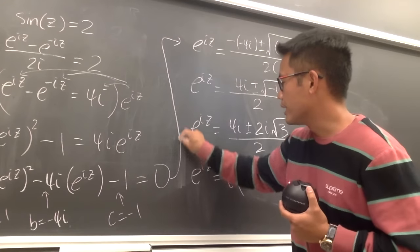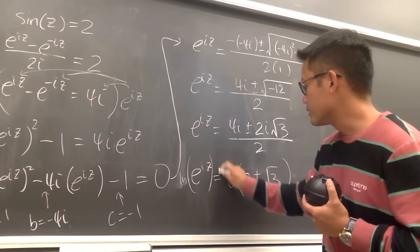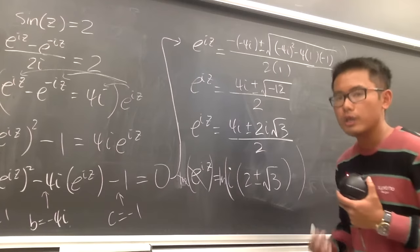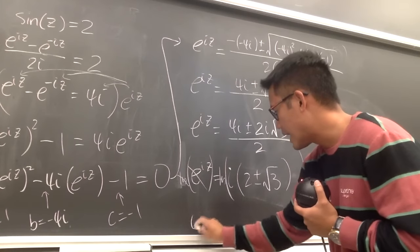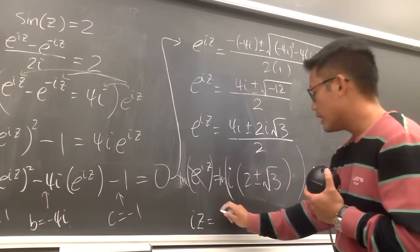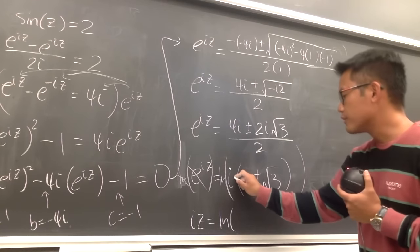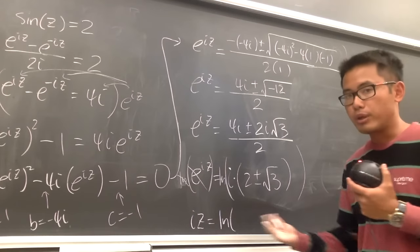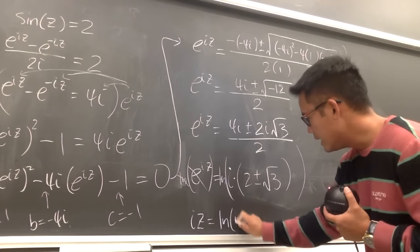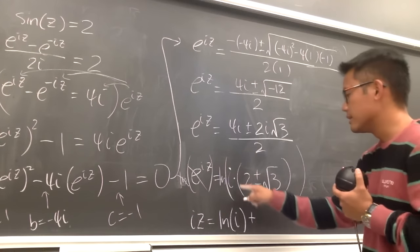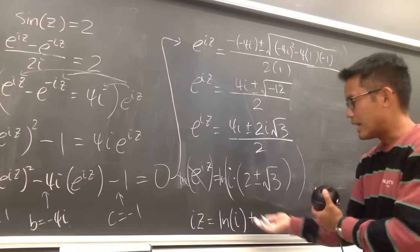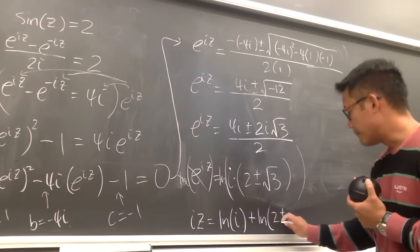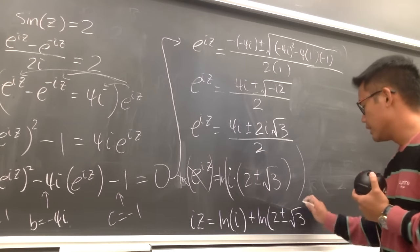We have e to something equal to something else, so we take the natural log on both sides. The ln and e cancel, leaving iz equals ln of i times (2 plus or minus root 3). Since this is a product, we can split it: iz equals ln(i) plus ln(2 plus or minus square root of 3).